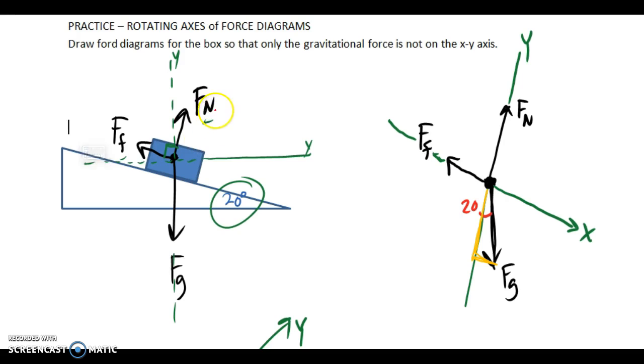We would draw a force diagram, normal force up, gravitational force down. Now the normal force actually is perpendicular to the surface so it goes off at an angle. Gravitational force is straight down, friction force parallel to the surface holding it in place.